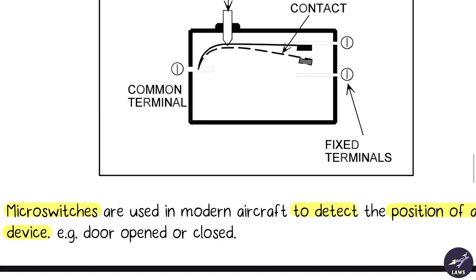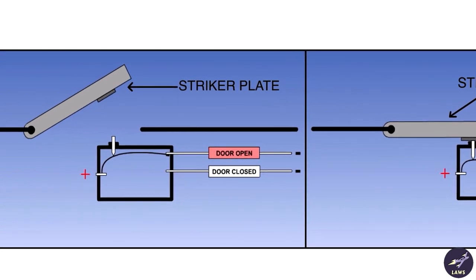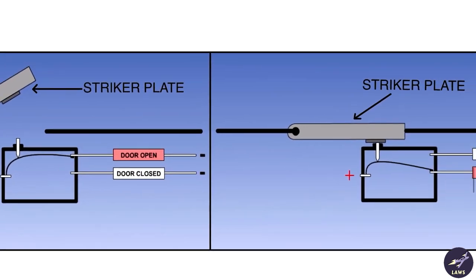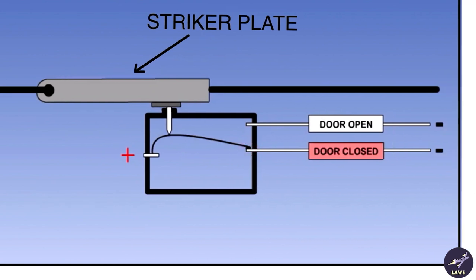In these examples, if the striker plate hasn't struck the plunger, the contact will be on the upper terminal and it will give the door open indication in the cockpit. If the striker plate strikes the plunger, the contact will move down and it will give the door closed indication in the cockpit. It's pretty simple.